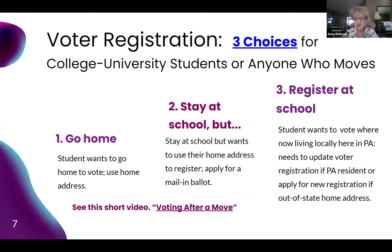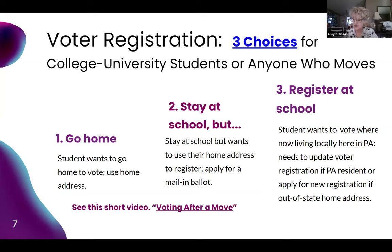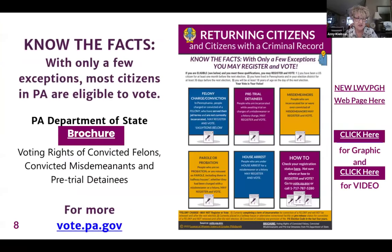Out-of-state students who choose to register in Pennsylvania should cancel their previous registration in their home state, and that link is on OPA.gov. The deadline to register to vote for the April 23rd primary is April 8th, and the mail-in ballot application deadline is April 16th. Be aware that some states like Wisconsin are passing laws that limit the eligibility of out-of-state students to vote.